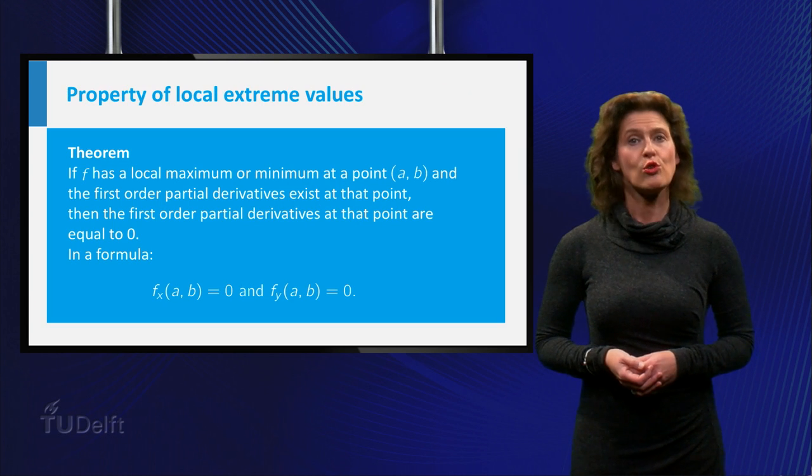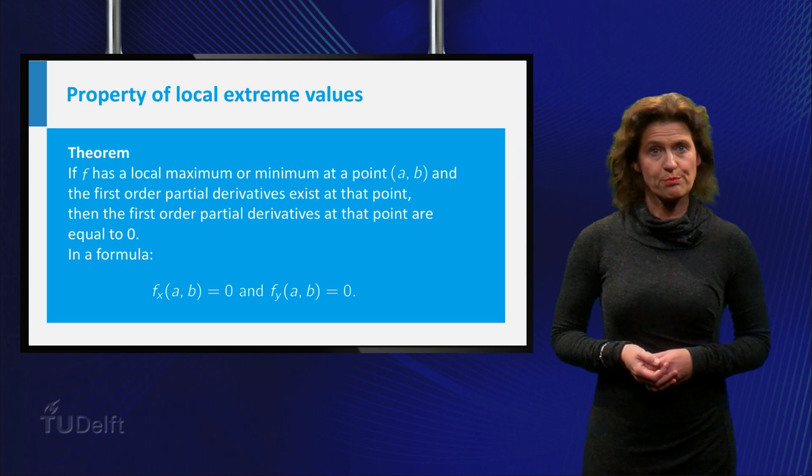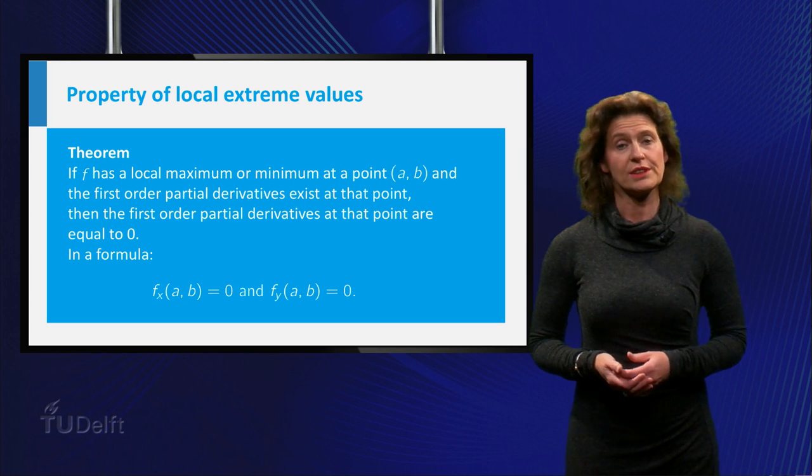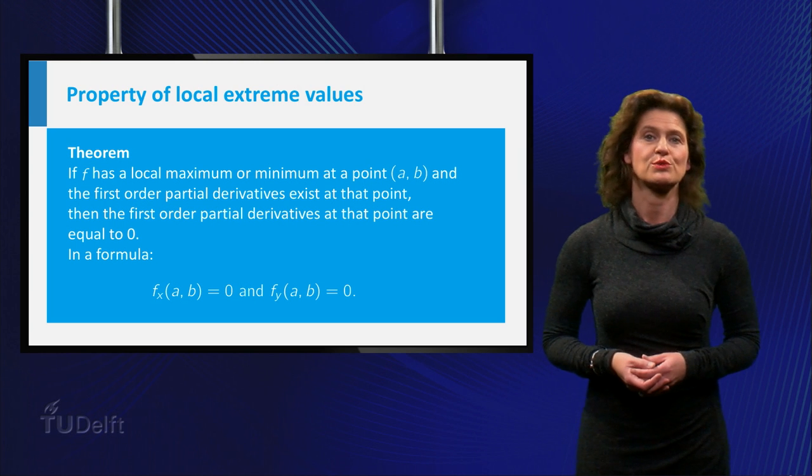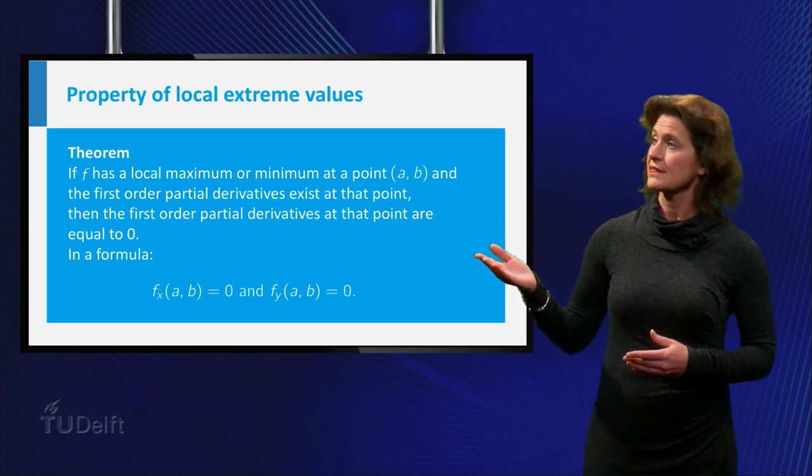If f has a local maximum or minimum at a point, and the first order partial derivatives exist at that point, then the first order partial derivatives at that point are equal to zero. Here it is in the formula.